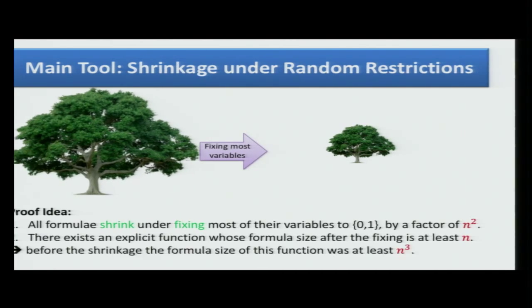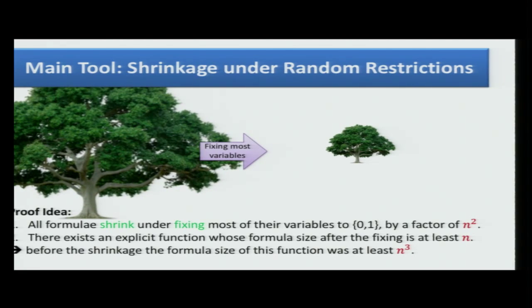However, Andreev showed that there exists some explicit function whose formula size after the fixing is at least n. So what does this mean? It means that before, it was at least n cubed. In other words, in order to show that something is big, it is enough to show that it shrinks by a large factor, and then that it is not that small afterwards. This is a technique.